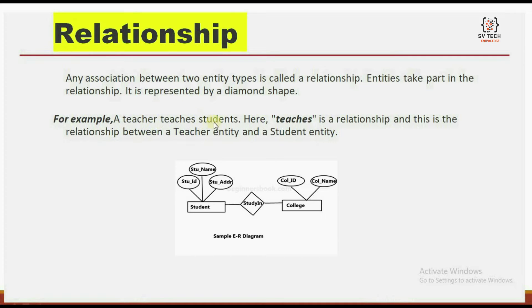For example, a teacher teaches students. Here, teacher and students are entities. 'Teaches' is the relation between the teacher and student. We can take another example: student and college. Student is an entity and college is an entity. The relationship between the student and college is 'studying'. This is the relationship definition.